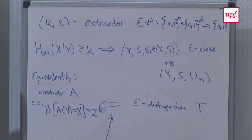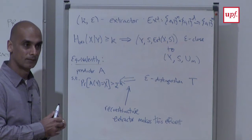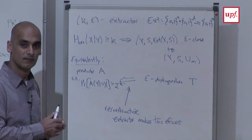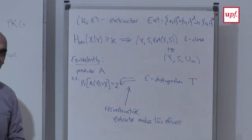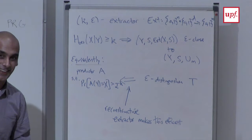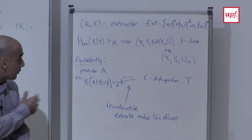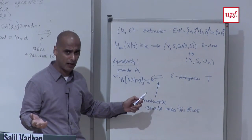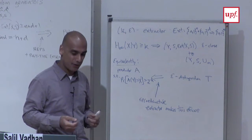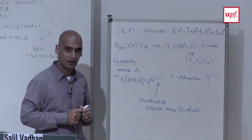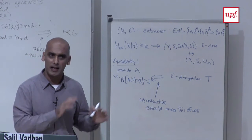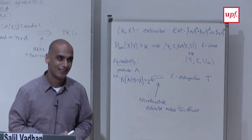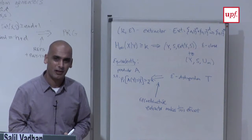Are there any questions about this? On the question of non-uniformity: nothing I did was really using non-uniformity. I use the word 'advice' in talking about reconstructive extractors, but when we did this reduction, we just chose the advice uniformly at random — no hard-wiring anything non-uniformly. I decided to work in a non-uniform setting because some of the later definitions become a little more complicated in a uniform setting.